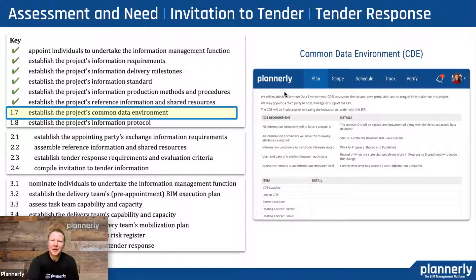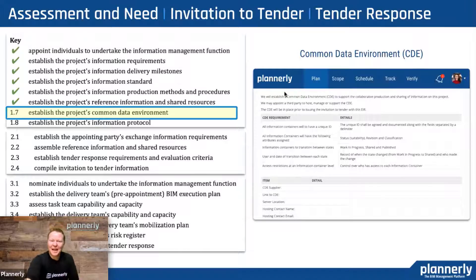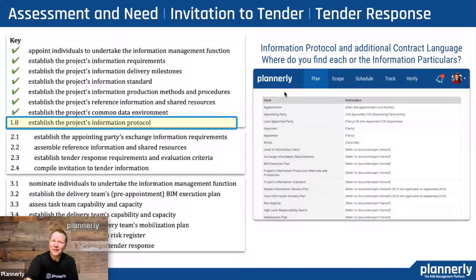And then the last two in this section for assessment and need: understanding where we're going to put things, how are they going to be managed. Is it one common data environment? Is it a network of them? What is it that we're going to use to communicate and share information? It's really important to establish that up front before you start to involve many teams. A lot of people have said that the Plannerly platform is the BIM execution planning CDE. There is a misconception that a CDE is just one single place — how do we manage all of those different places and all that information? And then the information protocols: understanding the contractual side of things, the information particulars, where you find specific things. Understanding that and putting it into place early on is really important, so everyone talks the same language and those terms and conditions are pushed through each of those appointments later on.